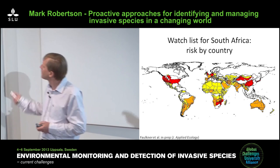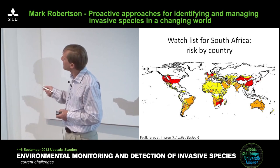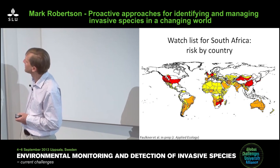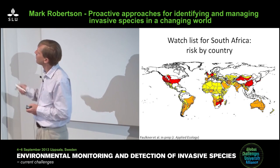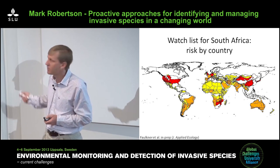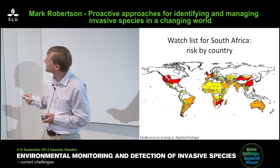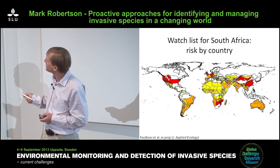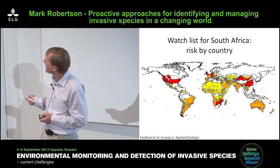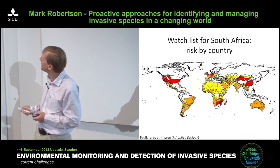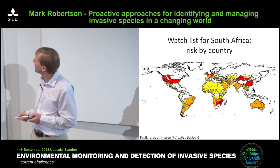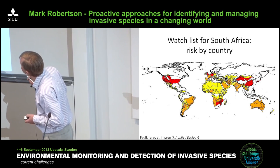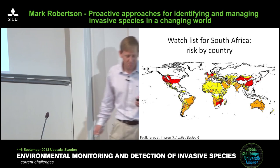Looking at the watch list map for South Africa, the red areas are where we really need to watch out — regions we trade heavily with where there is climate suitability matching our region. Orange areas are slightly less risky, yellow the lowest, and white we don't need to worry about. Maybe southern Sweden — there might be something there.